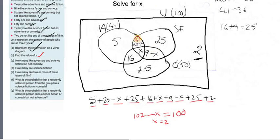x equals 2. That means, then, that this here is equal to 18, this here is equal to 7, and this is equal to 2. Okay? Right. So part C, this here. How many like adventure and science fiction, but not comedy? Well, adventure and science fiction, that's this bit here.